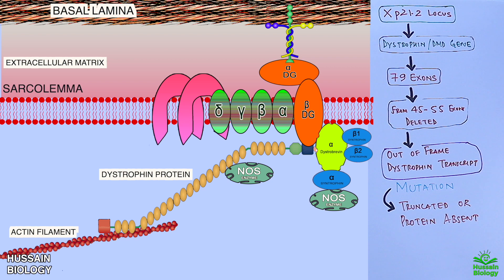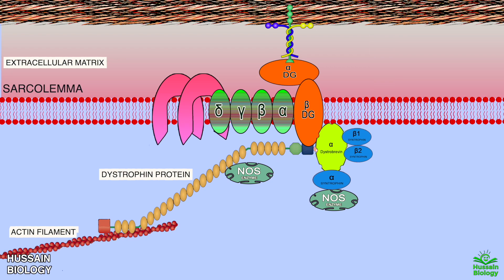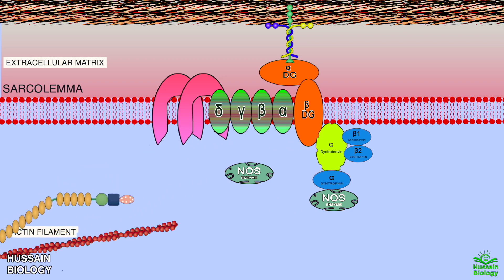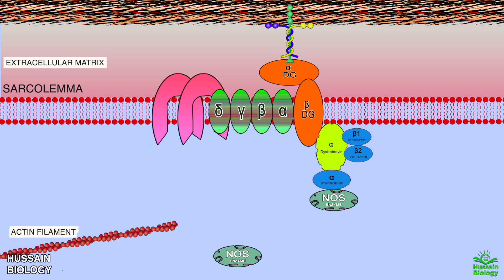In Duchenne muscular dystrophy, dystrophin is absent, and in that case the DAPC — the Dystrophin Associated Protein Complex — is unable to form.